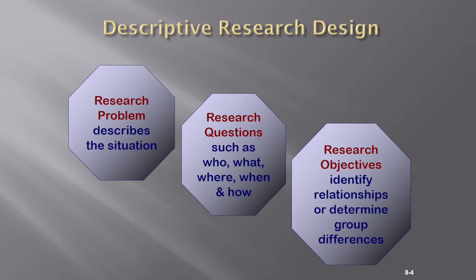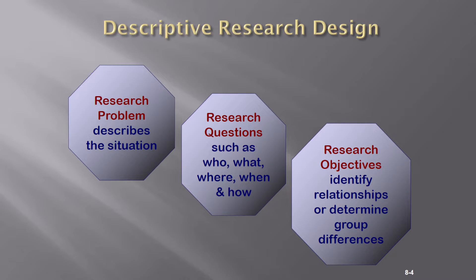Mostly your research question starts with who, what, where, when, and how. The majority of questions start with 'what' and 'who', because 'who' tells the process. After designing the research question, you move toward the objective. The objective identifies the relation between variables or determines the group, and it also tells which type of test you will apply — for example, a t-test to find a relation.